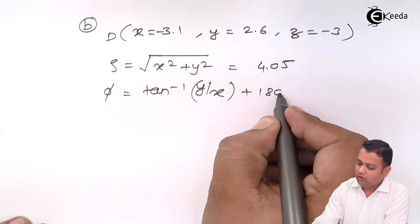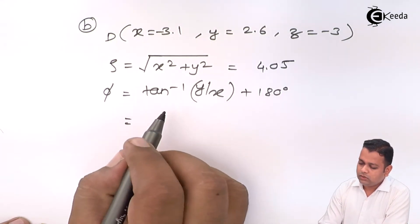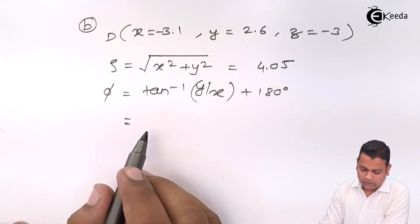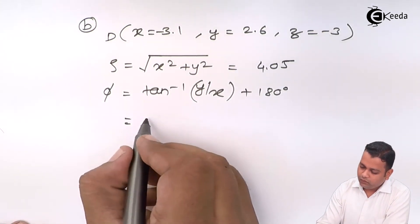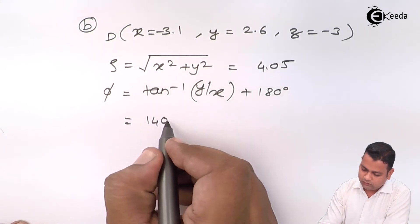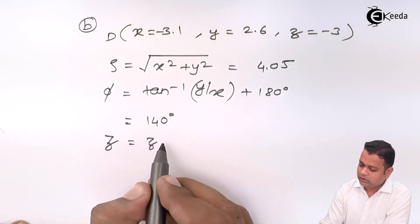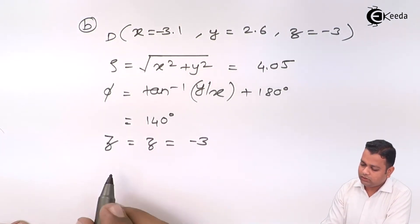So, that is why we must add 180 degrees to it. So, if we put x, y and this operation will give us the value 140 degrees and z will be the z that is equal to minus 3.